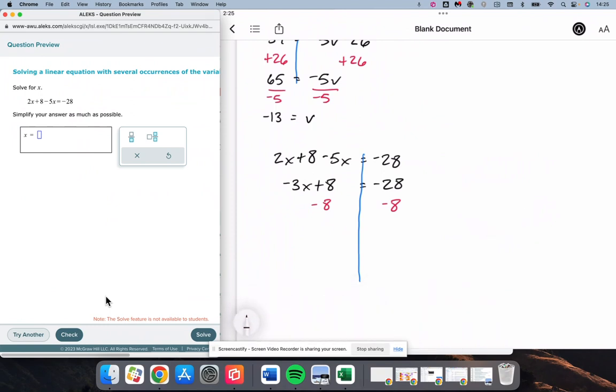And the positive 8 minus 8 on the left will make 0, leaving negative 3x. Negative 28 minus 8 is negative 36. We're going to divide by negative 3.